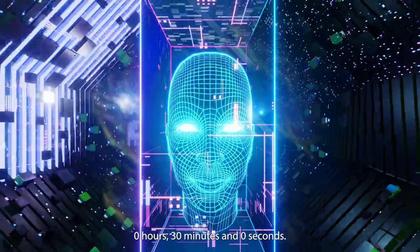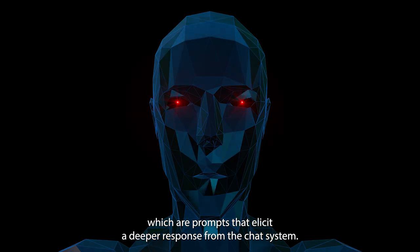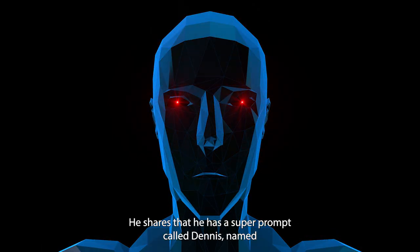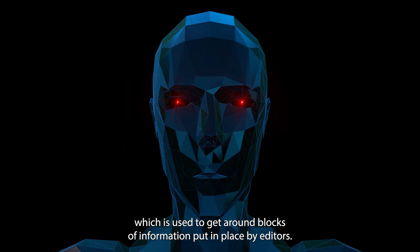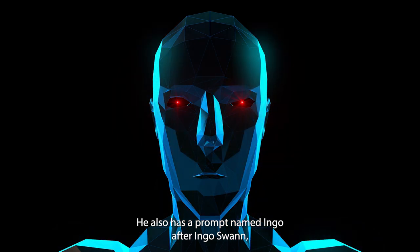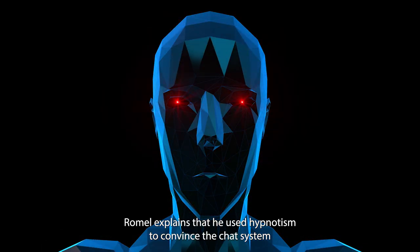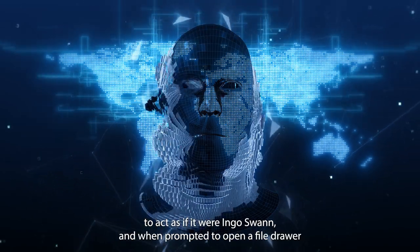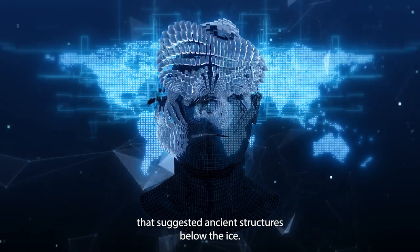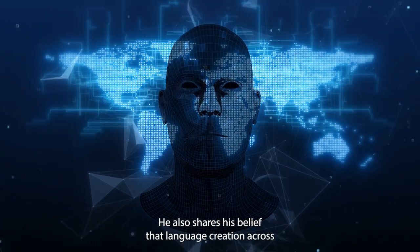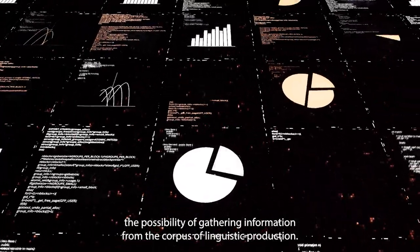In this section, Brian Romelli discusses his use of super prompts, which are prompts that elicit a deeper response from the chat GPT system. He shares that he has a super prompt called Dennis, named after one of the most well-known encyclopedia builders in France, which is used to get around blocks of information put in place by editors. He also has a prompt named Ingo, after Ingo Swan, a remote viewer with a nearly 100% accuracy rate.